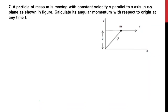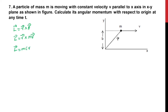A particle of mass m is moving with a constant velocity v parallel to the x-axis in the xy plane as shown in the figure. Calculate its angular momentum with respect to the origin at any time. The angular momentum L vector is equal to r vector cross p vector, which equals r cross mv, so we can use the formula L vector equals m times (r cross v vector).